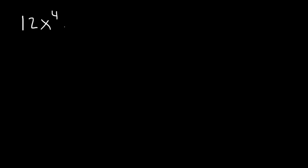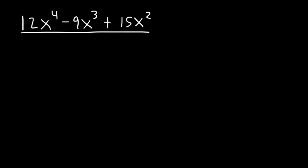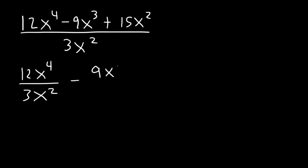In this lesson we're going to divide a polynomial by a monomial. For example, if we have 12x to the fourth minus 9x cubed plus 15x squared, all divided by a single term — a monomial — in this case 3x squared. Whenever you're dividing by a single term, the best thing to do is separate the fraction into smaller fractions and divide each term in the numerator by 3x squared.